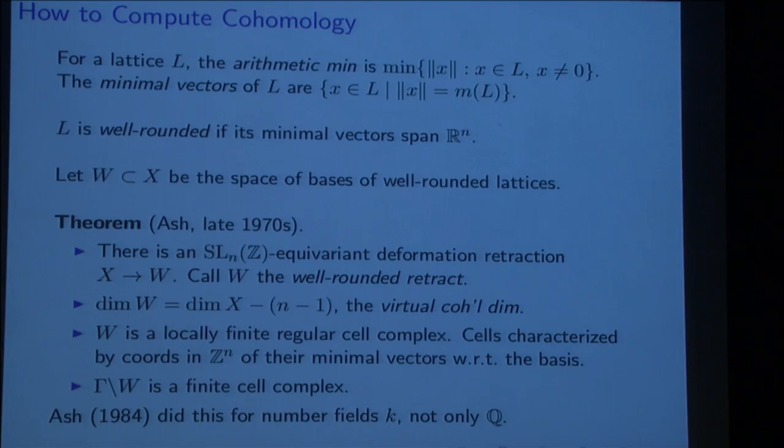A few natural definitions for lattice L. The arithmetic minimum is the smallest length of all nonzero lengths that are attained in the lattice. The minimal vectors of L are all the vectors that attain that minimal nonzero length. Avner Ash introduced the term that L is well-rounded if its minimal vectors are enough to span R^n. Think of the classical root lattices, for example. We let W be a subspace of X, the space of all bases of well-rounded lattices.